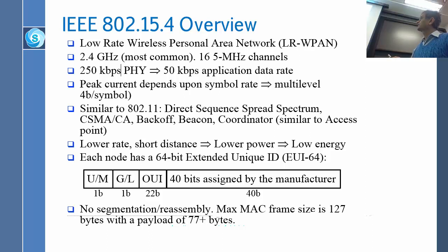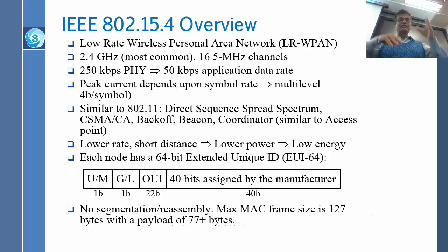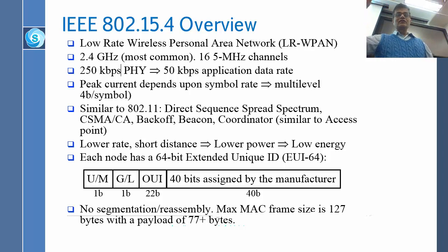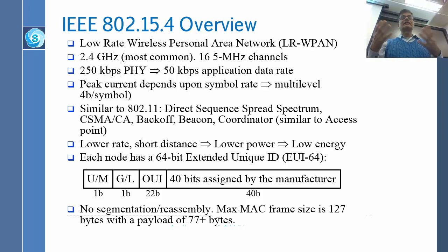For Wi-Fi we use 20 megahertz channels. For Bluetooth we use 1 megahertz frequency hopping — so 80 channels, and we just frequency hop. Here we are having 5 megahertz channels, and you get 250 kilobits per second out of that. And only 50 kilobits you get at the application. So if you notice the bits on the wireless, you will see 250 kilobits going per second, but most of those bits might be overhead and other things, and by the time you reach the application you get 50 kilobits.